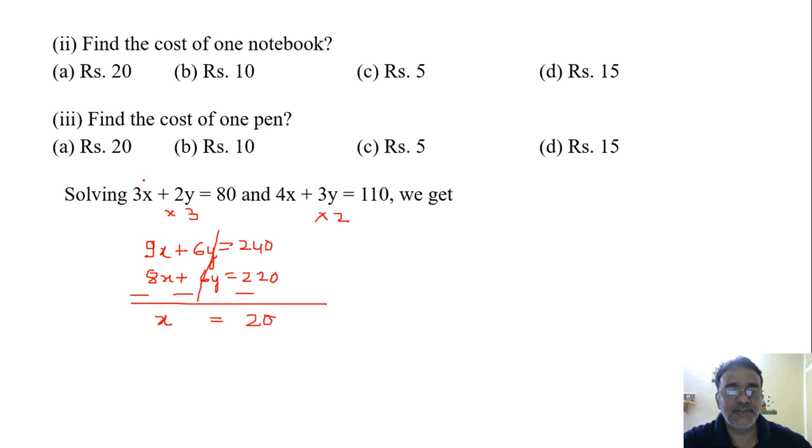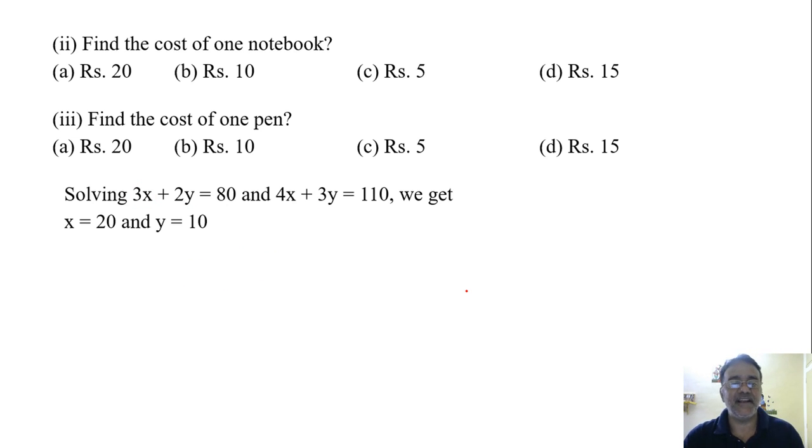And we will get X is equals to 20. Now if you substitute X is equals to 20 here. So it will become 60. So 2Y is equals to 20. So Y is equals to 10. That means on solving we are getting X is equals to 20 and Y is equals to 10.